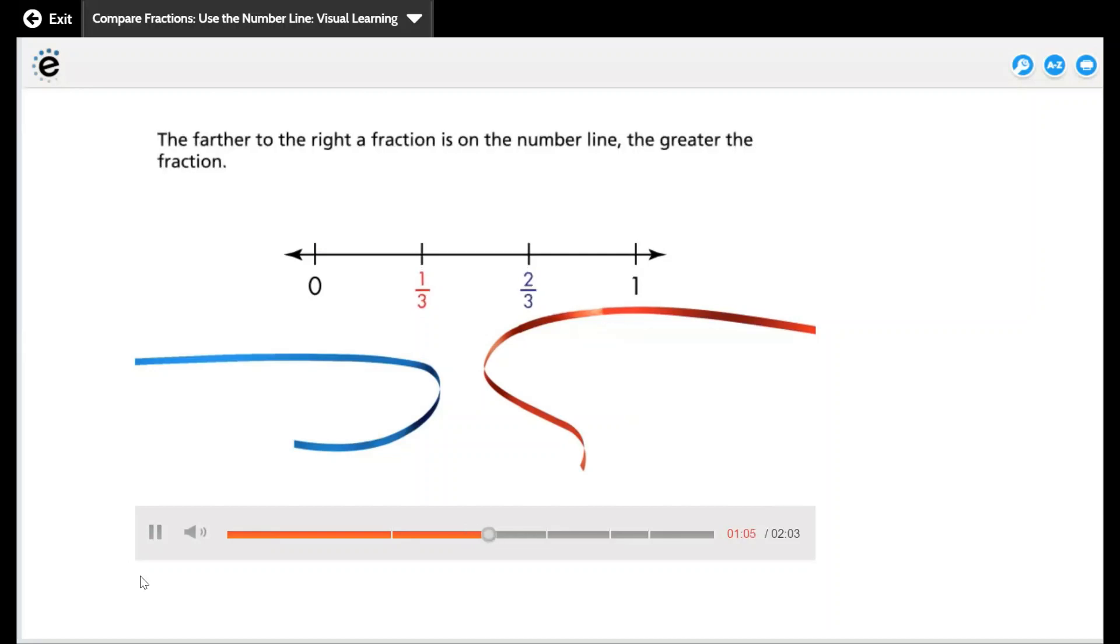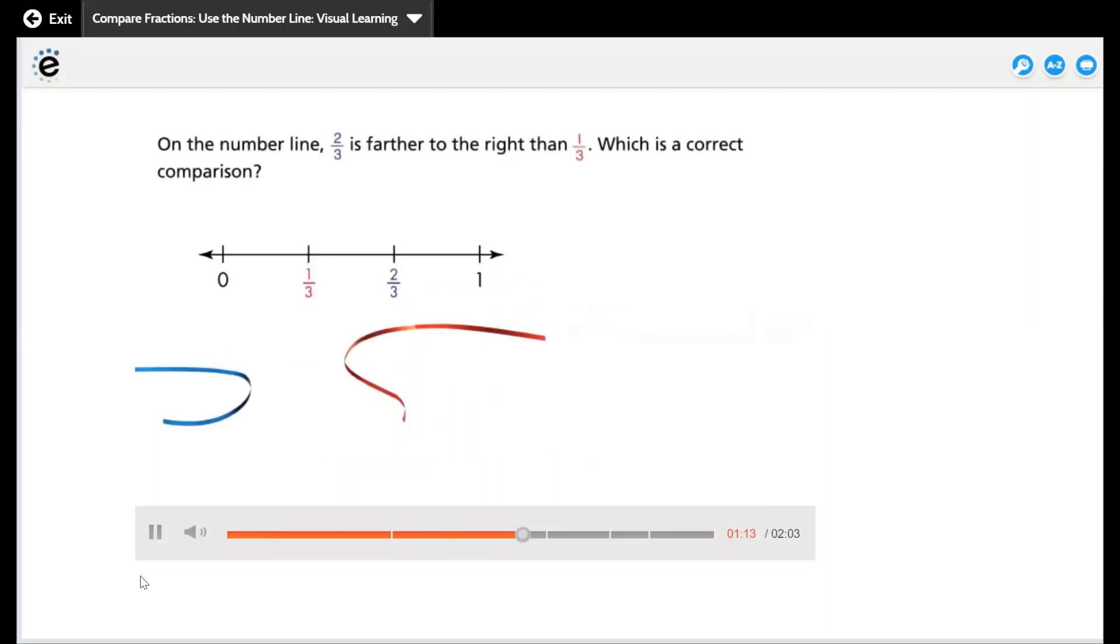The farther to the right a fraction is on the number line, the greater the fraction. On the number line, two-thirds is farther to the right than one-third. Which is a correct comparison?